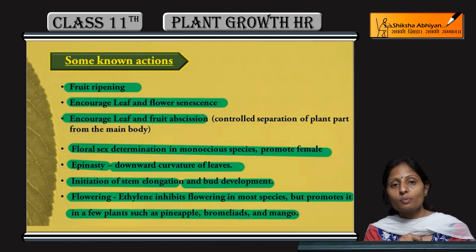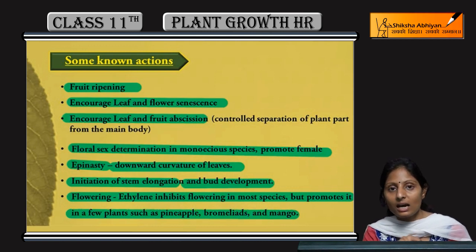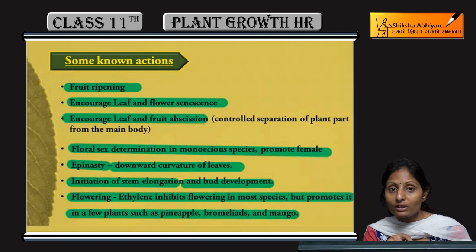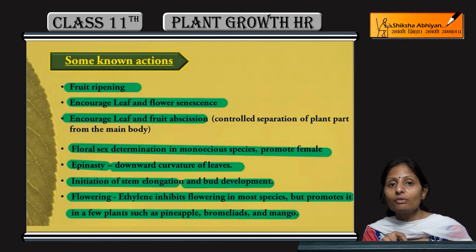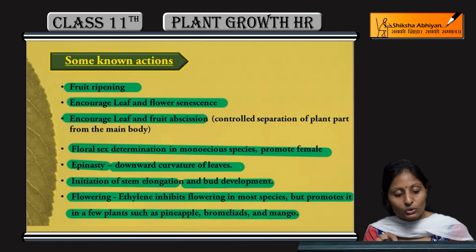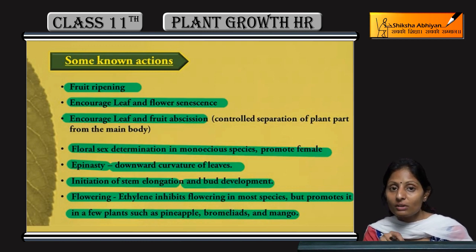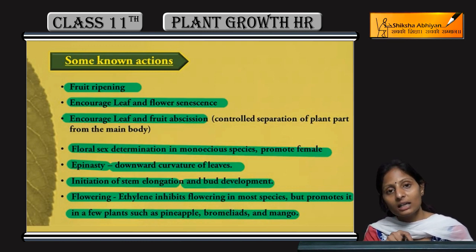Ethylene inhibits flowering in most species, but promotes it in a few plants such as pineapples, bromeliads, and mango. So in most plants ethylene inhibits flowering, while in a few it promotes it. These are the main functions performed by ethylene.